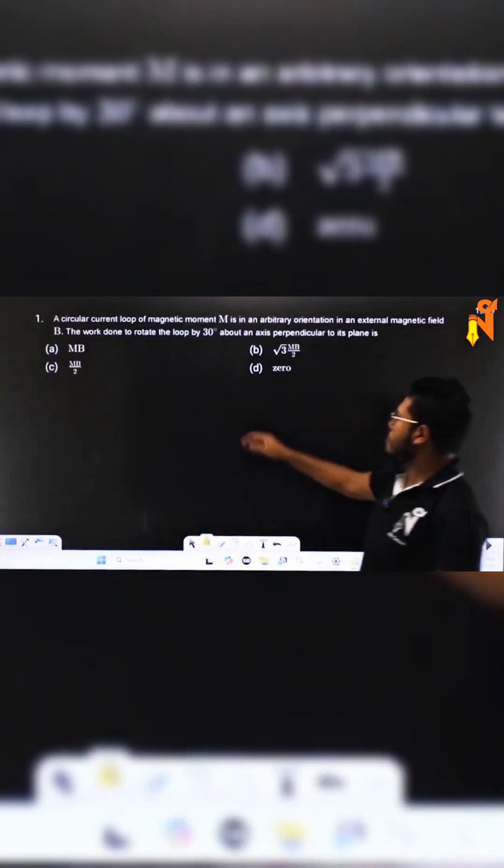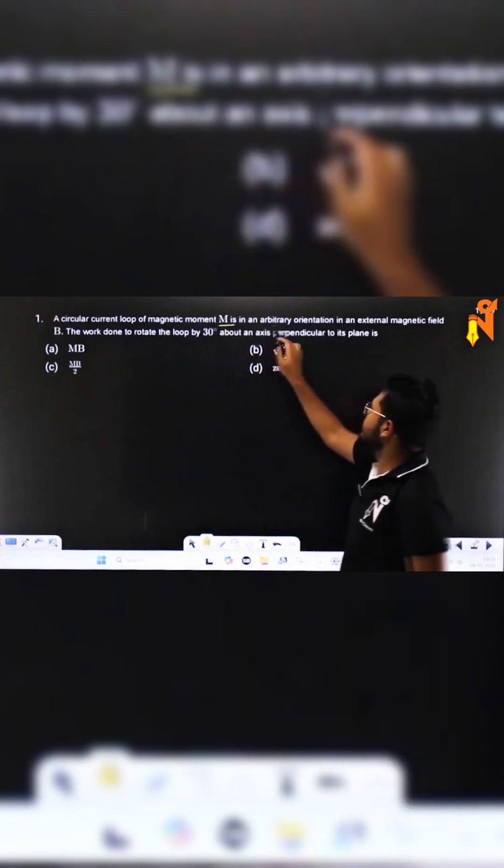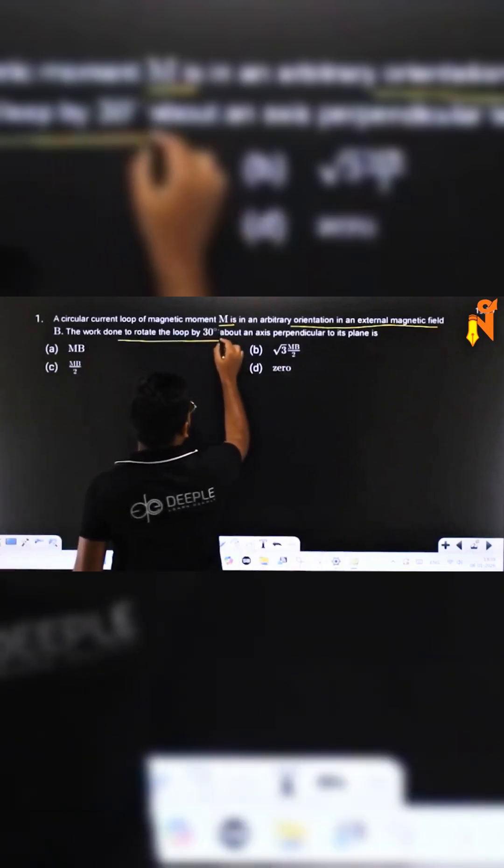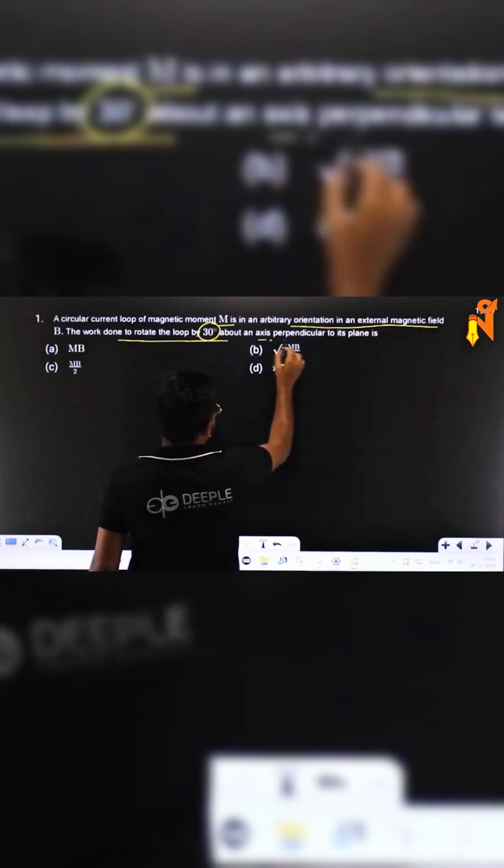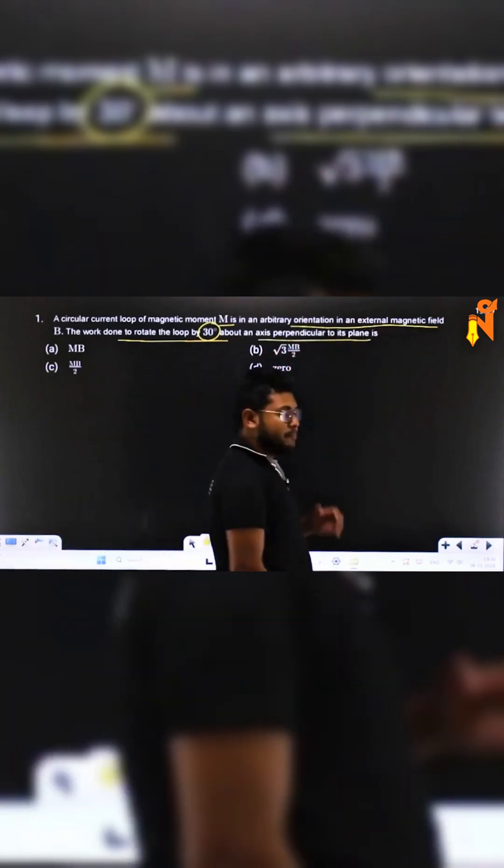This is the first question. Let me choose the proper color. A circular current loop of magnetic moment capital M is in arbitrary orientation in an external magnetic field B. The work done to rotate the loop by 30 degrees about an axis perpendicular to its plane is... Now perpendicular to its plane means let's try to understand how to solve it.